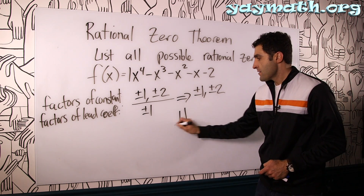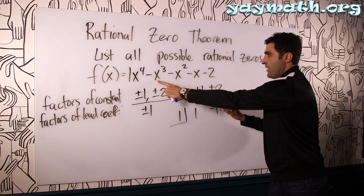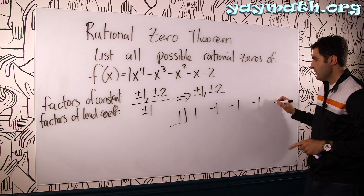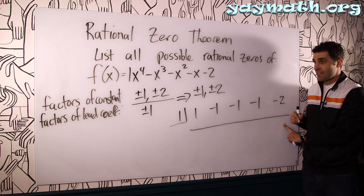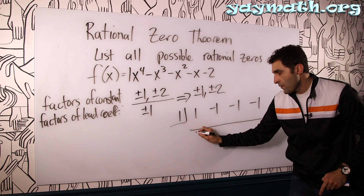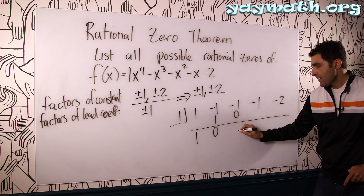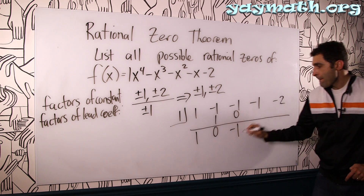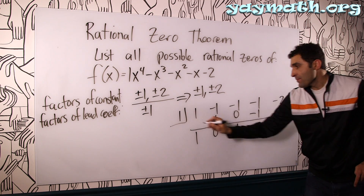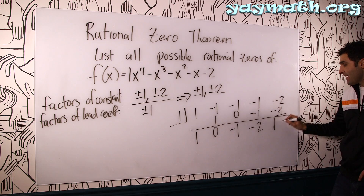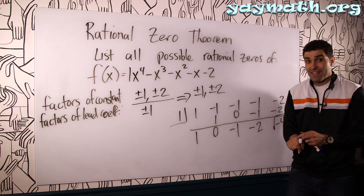We know there are four total solutions because the degree is four. You can play a little guessing game — you could hope that one is a solution by synthetically dividing one in and seeing if it divides evenly. If the remainder is zero, we know that one would be a solution. Let's give it a try. Coefficients: one, negative one, negative one, negative one, negative two. Drop the one, multiply, add, multiply, add, multiply, add, multiply, add. Unless I'm wrong, this is not a solution. So one is not a solution — it's out.